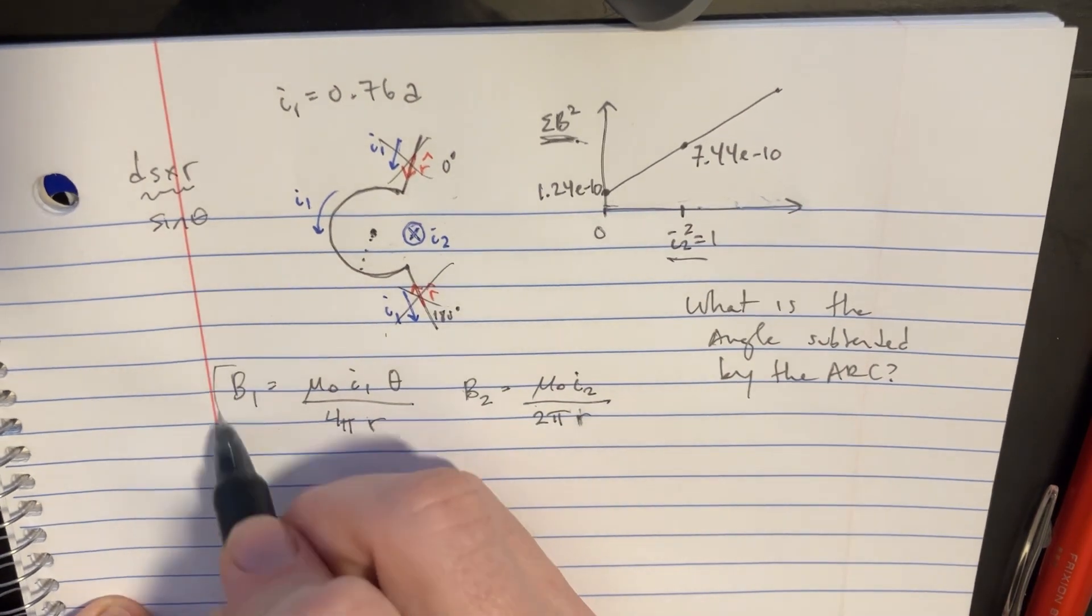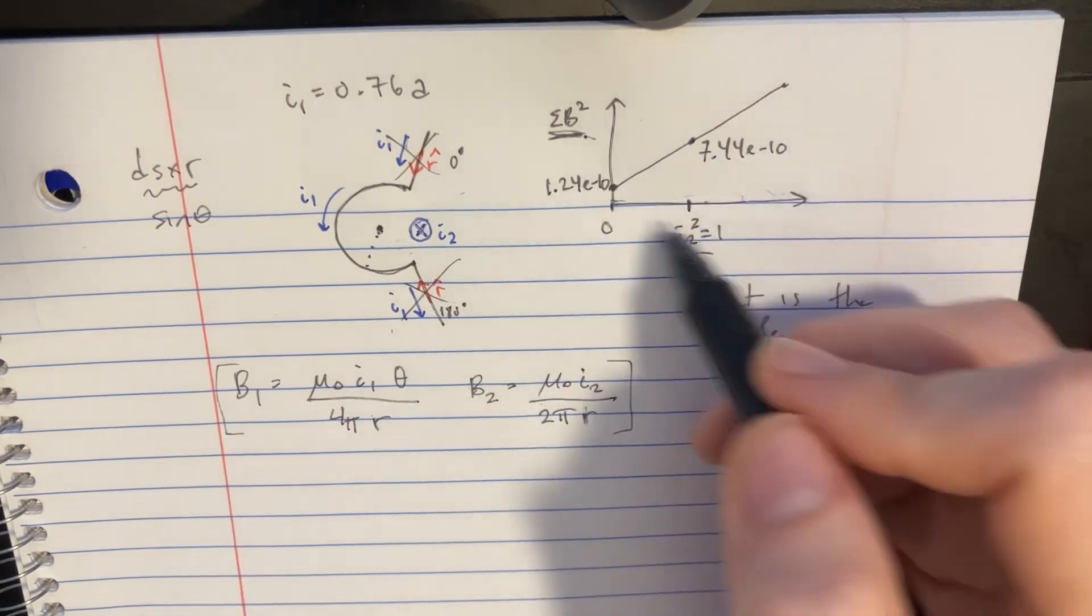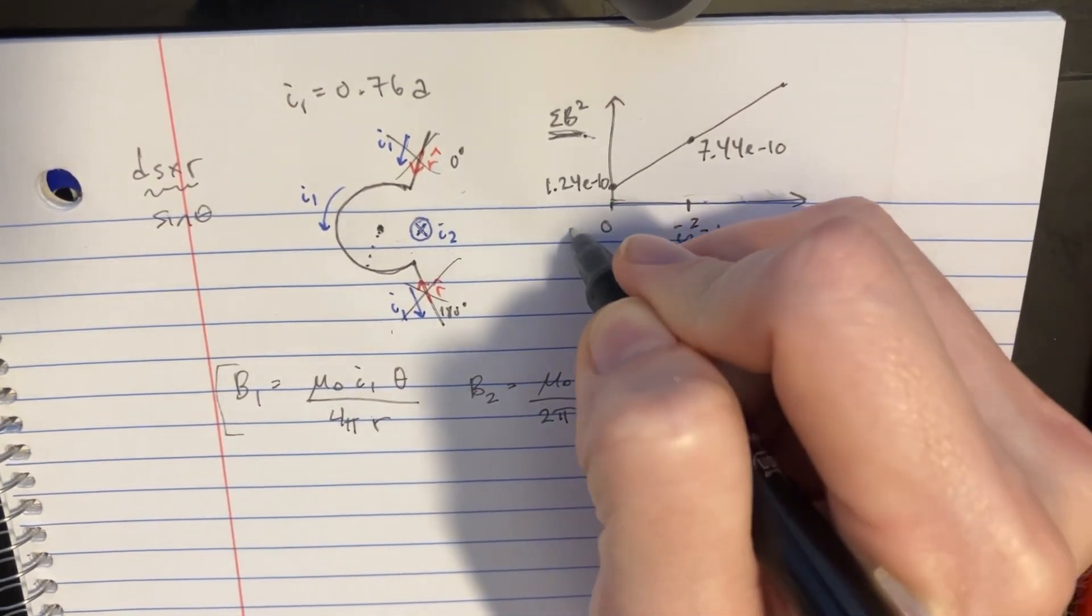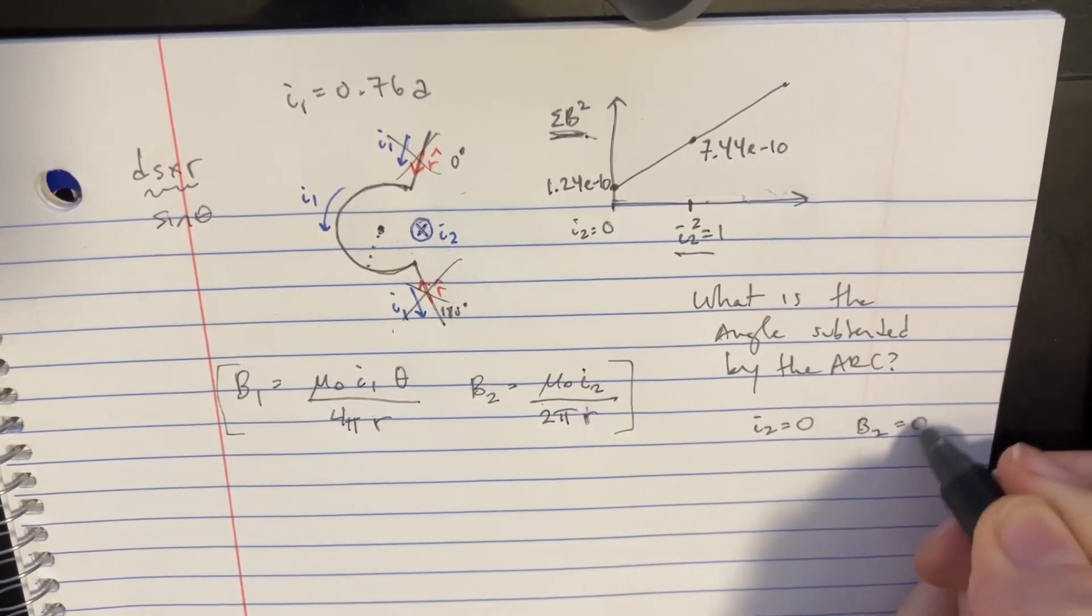So we've kind of got our two important equations here. Now we can try to gauge what's going on in this graph. There's a couple of really important points. This one right here. Because at that point, I2 is equal to 0. And if I2 equals 0, that means that B2 is also equal to 0.